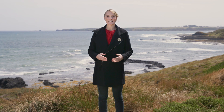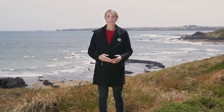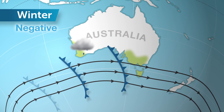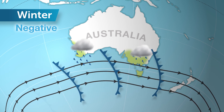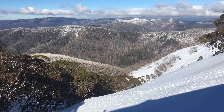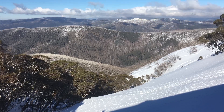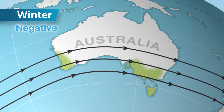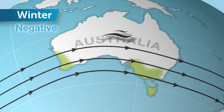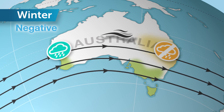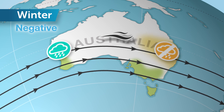The opposite is a negative SAM, which occurs when the westerly winds are further north than usual. This allows more wet weather to be drawn up from the south. A negative SAM in winter can also help bring good snowfall to the Alps. But if it moves too far north, the westerlies blow right across the continent, meaning the air is wet in the west but dry by the time it reaches the east coast.